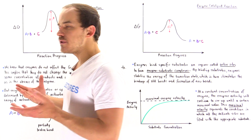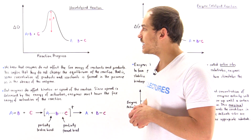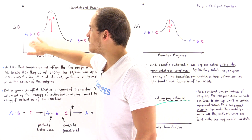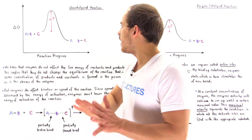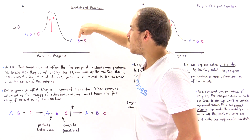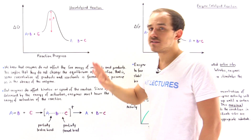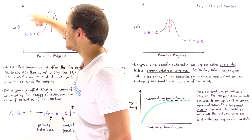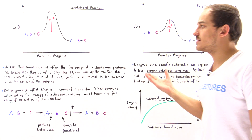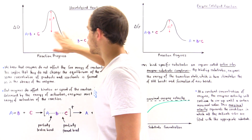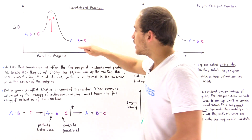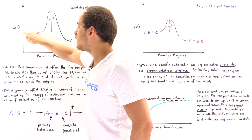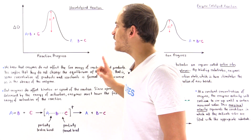Let's suppose we have a hypothetical elementary single-step reaction. On the reactant side, we have a bond between A and B, and C exists by itself. On the product side, we now have a bond between B and C, and A exists by itself. Based on this energy diagram — where the y-axis is Gibbs free energy and the x-axis is reaction progress — notice that the products are lower in energy than the reactants.